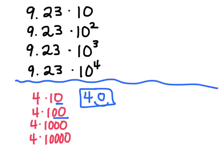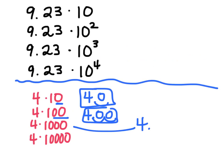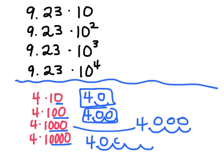This one has two zeros, so it started as 4. I'm going to move the decimal over twice — it's 400. And this one, it starts out as 4, and I'm going to move the decimal over 3 spots: it would become 4,000. This one, I would move it over 4 spots and it would become 40,000. So that's kind of a quick little trick.